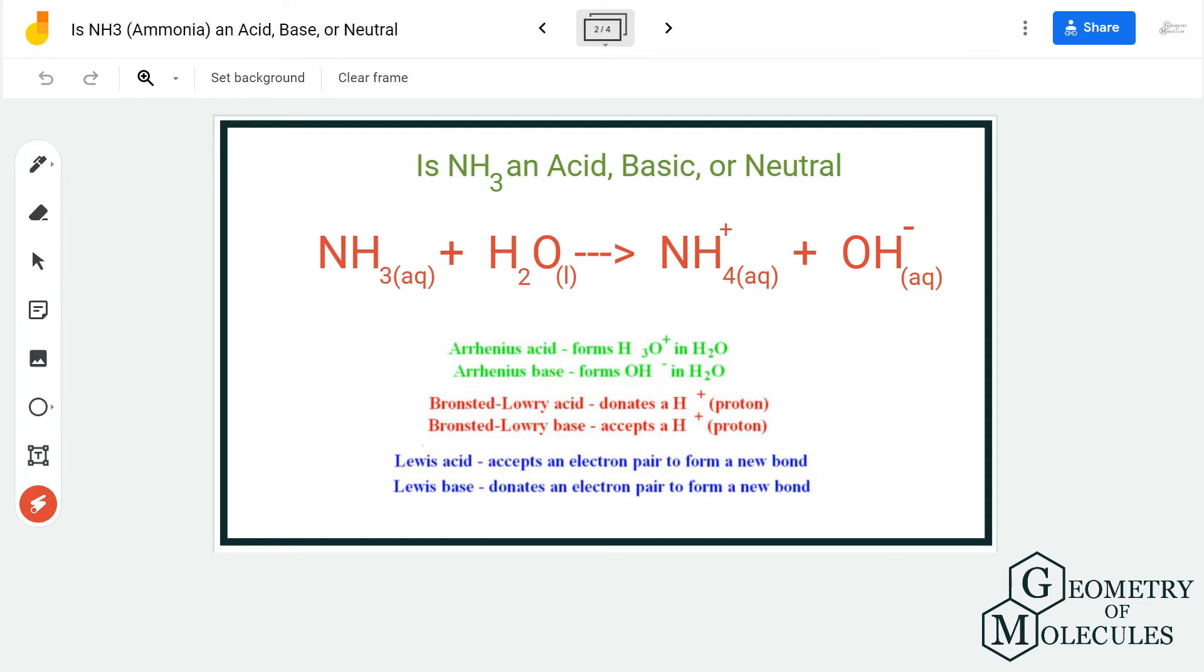Using a couple of theories, you can figure out what kind of properties it shows. Bases generally accept protons and acids donate protons. Here, it is accepting a proton and hence it becomes an Arrhenius base, as you can see, because it forms OH minus in H2O.